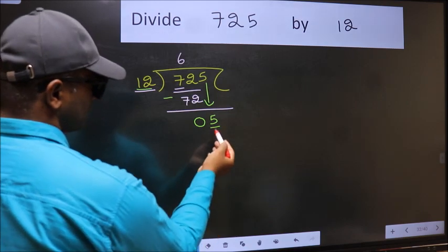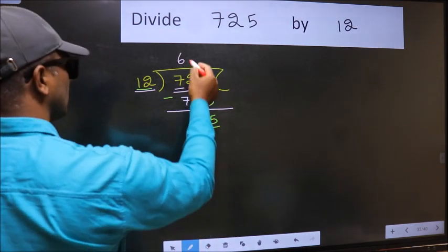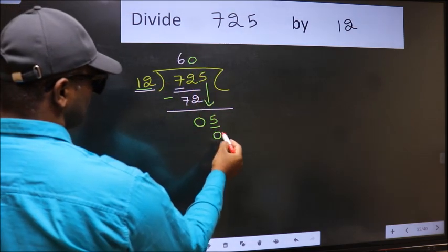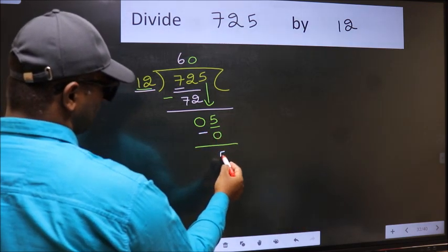But 12 is larger than 5. So what we should do is, we should take 0. So 12 into 0 is 0. Now you should subtract. 5 minus 0 is 5.